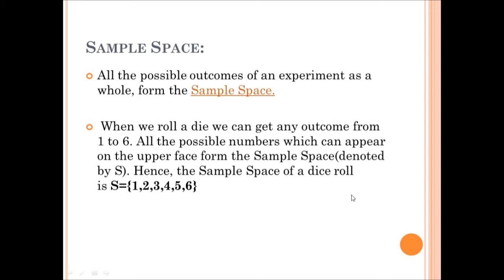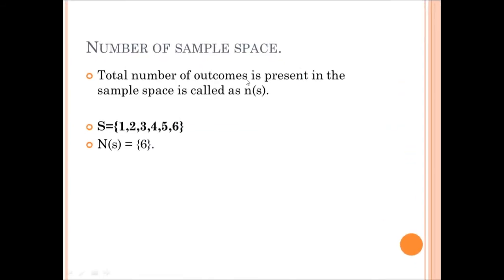The sample space of a dice is S = {1, 2, 3, 4, 5, 6}. For a coin, S = {Head, Tail}, so the number of sample points is 2. For cards, the sample space includes all possible outcomes. The number of sample points in a dice is 6, and for a coin it is 2 — one is head and the other is tail.